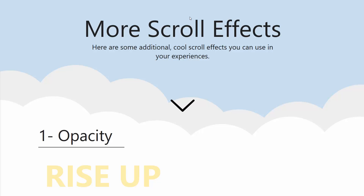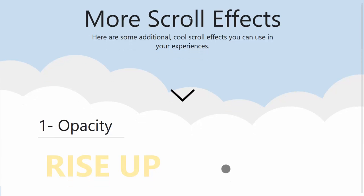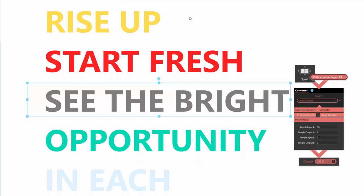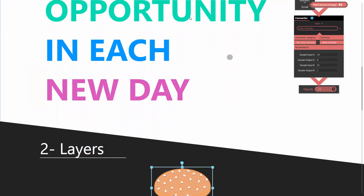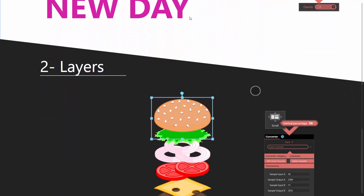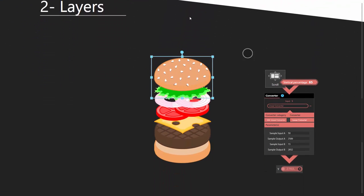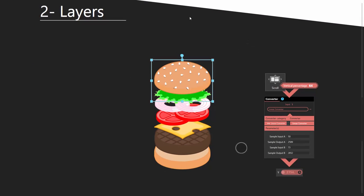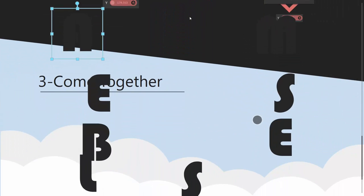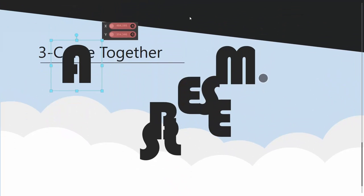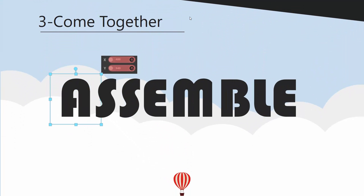Finally, some other examples of cool effects you can create thanks to the scroll collection. Here we modify the opacity of this text based on the vertical offset. If we go further, let's compress the burger — as I increase or decrease the offset, I'm closing and opening the items in that burger. Or here we have letters flying in from all corners, again all thanks to the notion of an offset. So with a little bit of practice, you can come up with some really awesome effects.